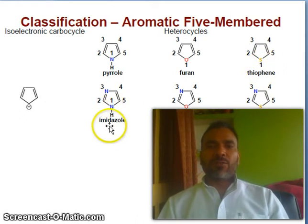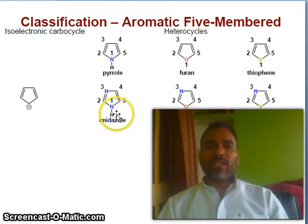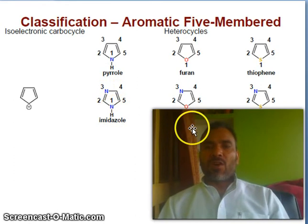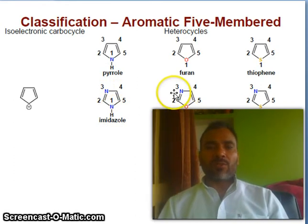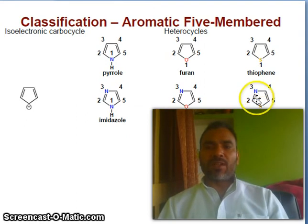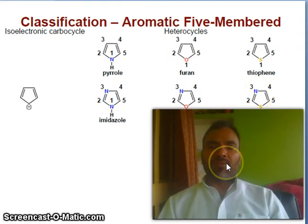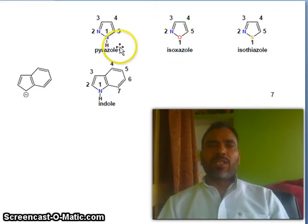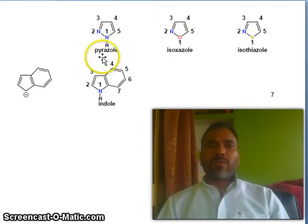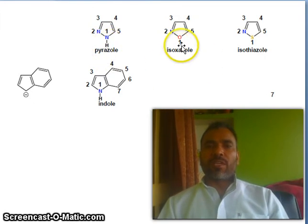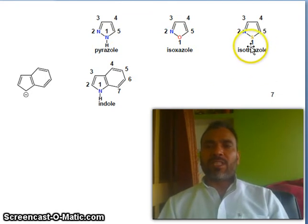Now introduction of two heteroatoms. Imidazole — numbering starts with the nitrogen which contains NH. That is important — not this nitrogen, NH. Oxazole — numbering starts with oxygen, not nitrogen. Thiazole — numbering starts with the sulfur, not nitrogen. So NH, O, and sulfur take priority. Pyrazole — numbering starts with the NH. Isoxazole — numbering starts with oxygen, not nitrogen. Isothiazole — numbering starts with the sulfur.